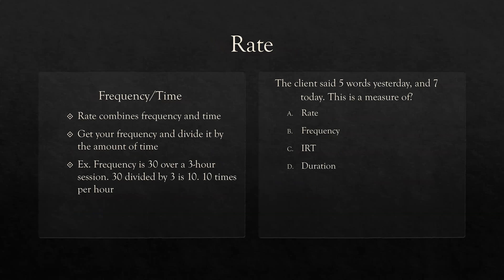Rate takes frequency and adds a time component to it. If I were to say yesterday my client had 10 instances of aggression, that's frequency. If I want to turn that to rate, I'd say over the course of three hours, the client had 10 instances of aggression — therefore 3.3 instances of aggression per hour. That word 'per' is what makes it rate. You're simply taking your frequency count and quantifying it over a set amount of time — combining frequency and time. Get your frequency, divide it by the amount of time: hours, minutes, or seconds.